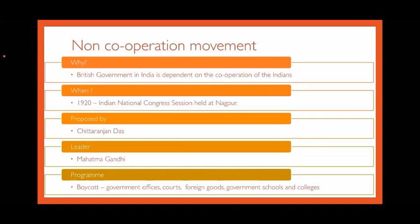The Non-Cooperation Movement. This movement was started on the belief that the British government in India depended only on the cooperation of Indians — so if Indians did not cooperate, the British government would collapse. The movement was started in 1920 at the Indian National Congress session held at Nagpur, proposed by Chitranjan Das, with Mahatma Gandhi as its leader. The programs under this movement included boycott of government offices, courts, foreign goods, and government schools and colleges.